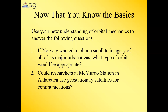Here are a couple of questions to close on. First: if Norway wanted to obtain satellite imagery of all its major urban areas, what type of orbit would be appropriate? Norway is in Europe with much of it above the Arctic Circle — a very northern latitude, similar to Russia. Second: can researchers at McMurdo Station in Antarctica use geosynchronous or geostationary satellites for communication? If not, why not, and what might they use instead?